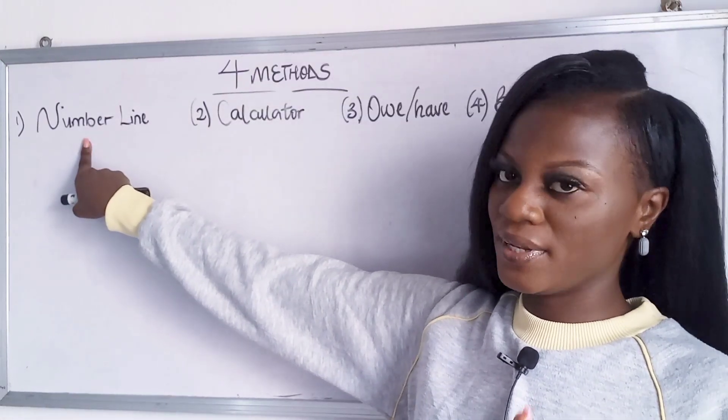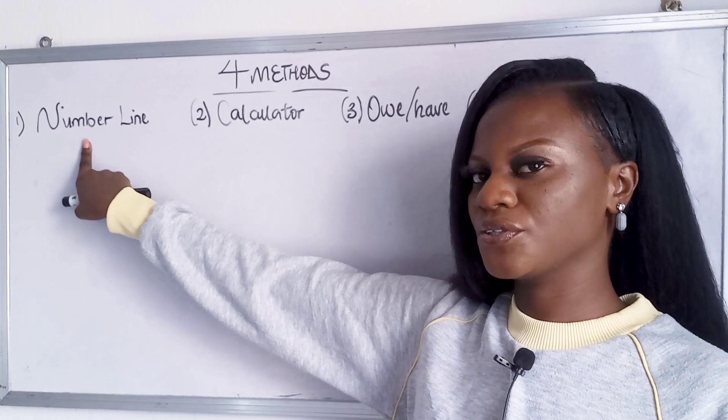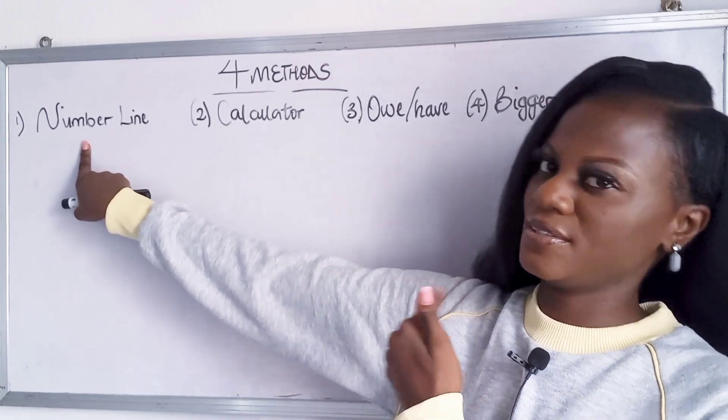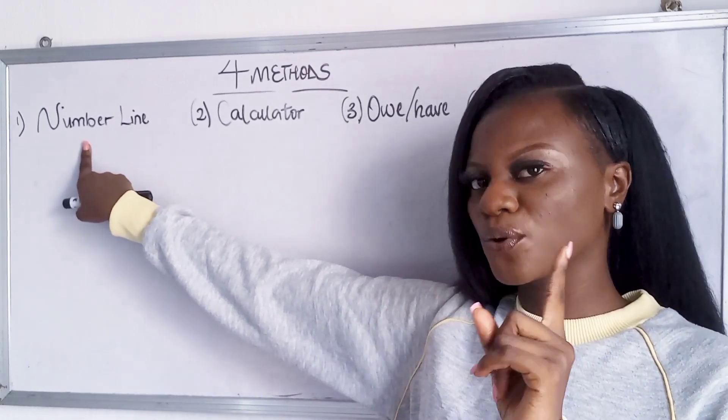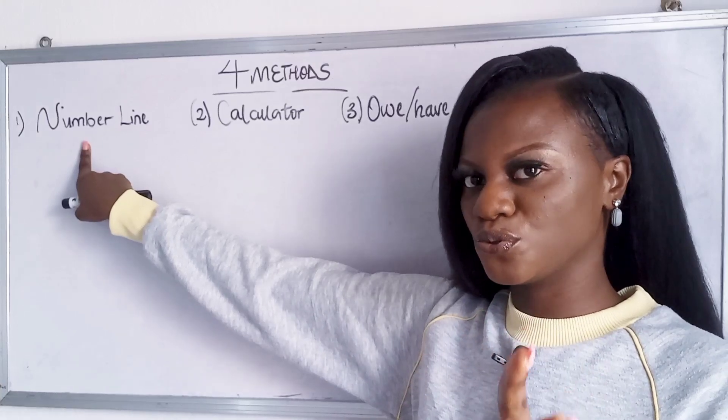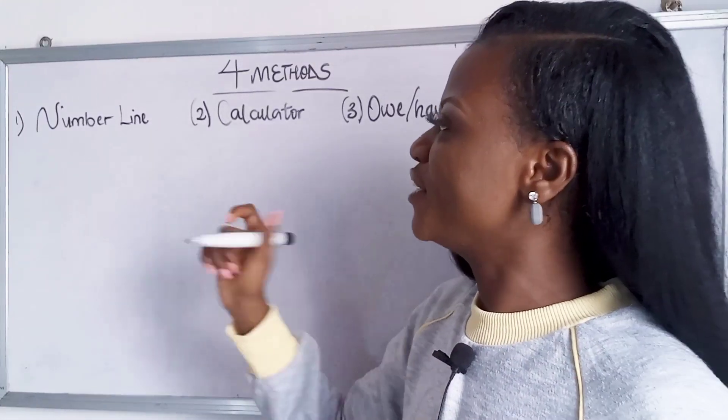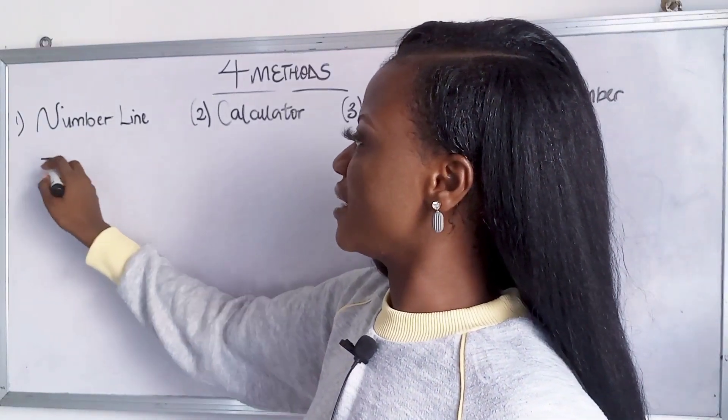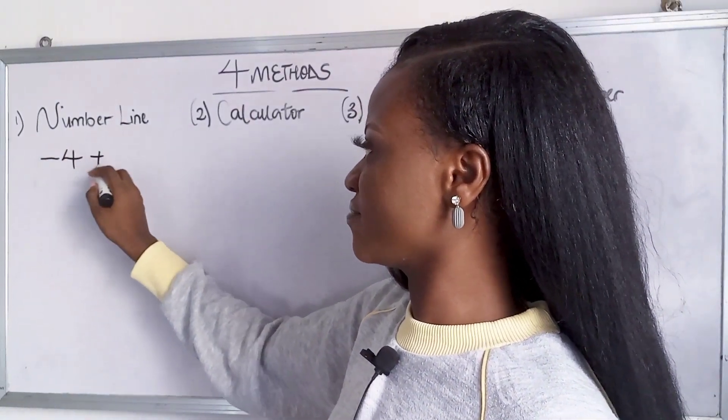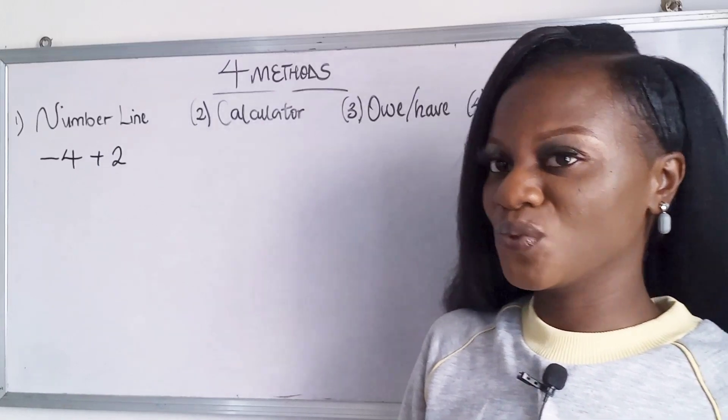So the first method is your number line method. Now I'm going to give a question and we're going to use the different methods to solve one question and then you choose what method you prefer.